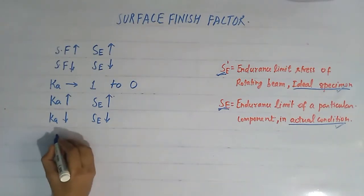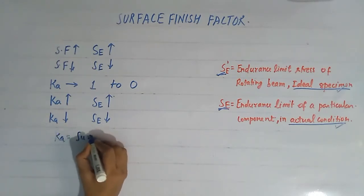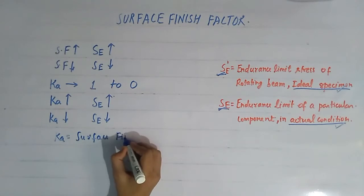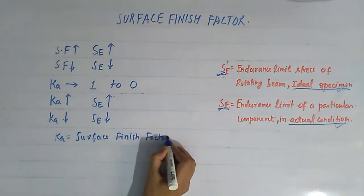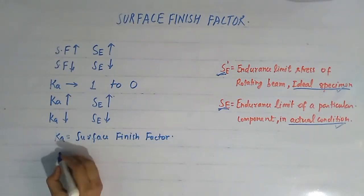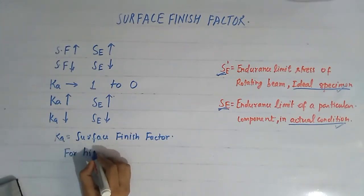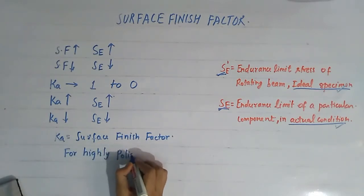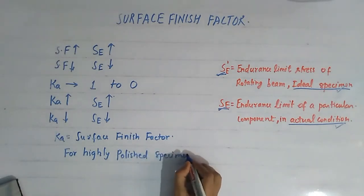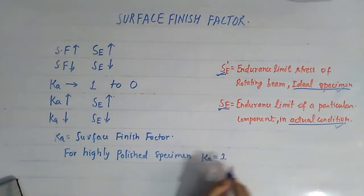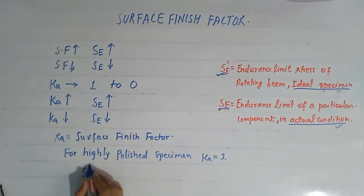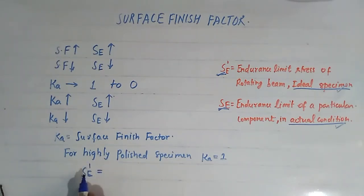Ka is the surface finish factor. For a highly polished specimen, Ka is taken as one. Since the ideal specimen, whose endurance limit is Sc-dash, is highly polished, the surface finish factor Ka will be one for the ideal specimen.